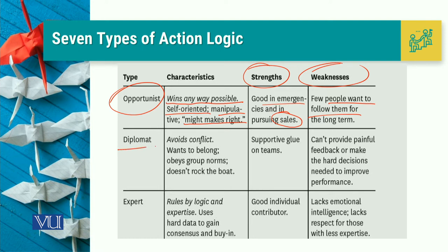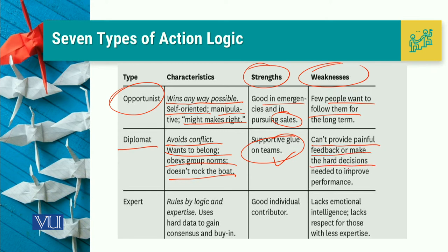The second level would be the diplomat. The diplomat is the person who is going to avoid conflict, who wants to belong, who obeys group norms, and obviously he or she would not be there to rock the boat. The major strength is that the diplomat maximizes focus on team orientation. However, the weakness is that the diplomat cannot provide painful feedback and make hard decisions.